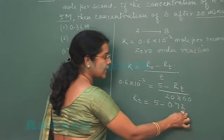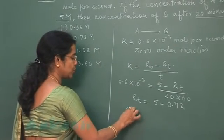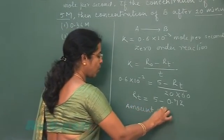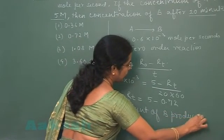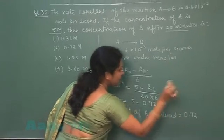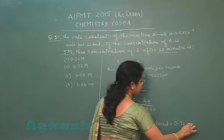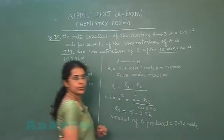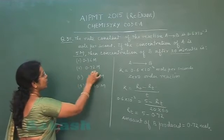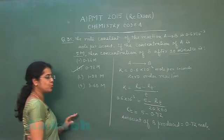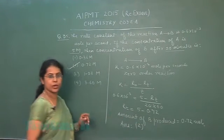So amount of the A reacted should be equal to amount of B produced. It means amount of B produced will be equal to amount of A reacted which is equal to 0.72 moles. Now let us see the option. The first option is 0.36 moles. Second option is 0.72 moles. It means correct answer of this question is option number 2.